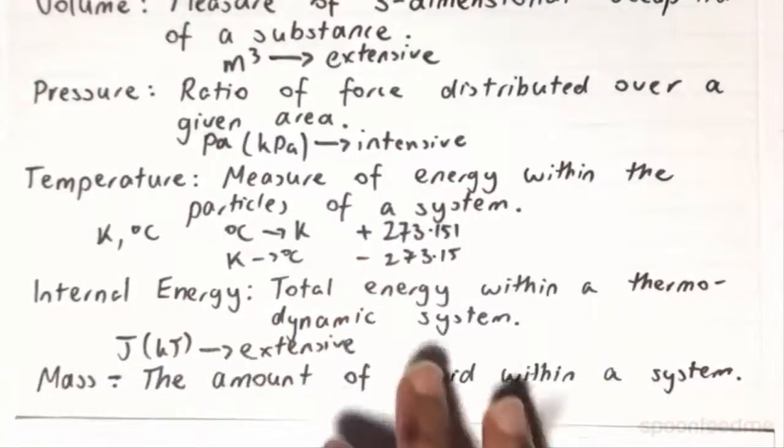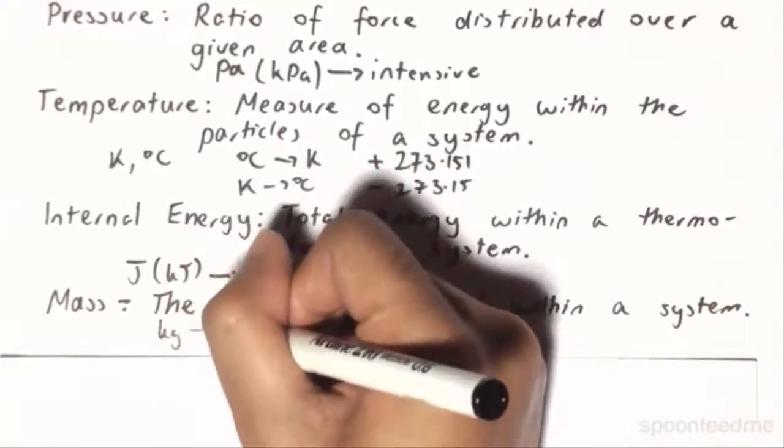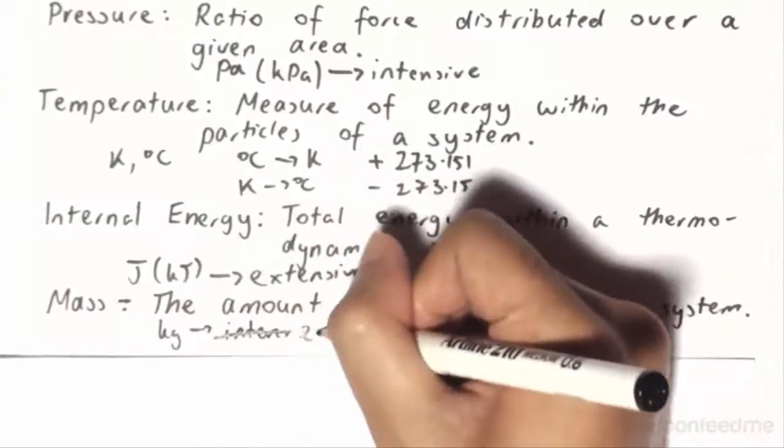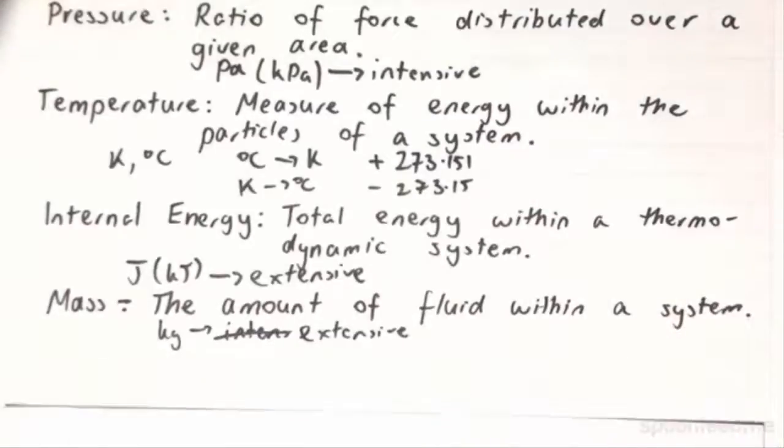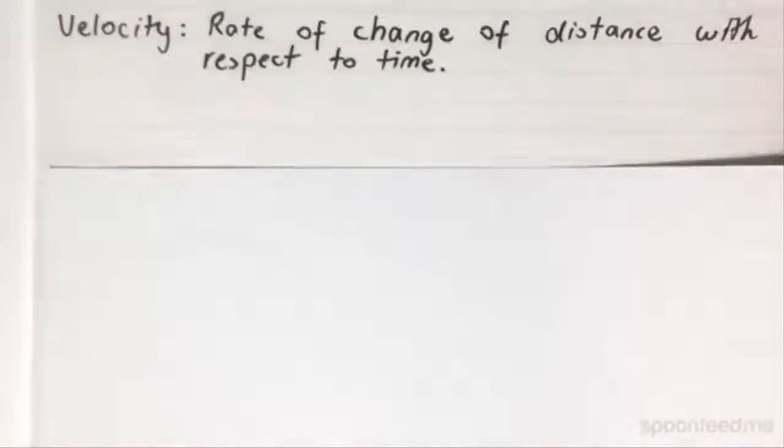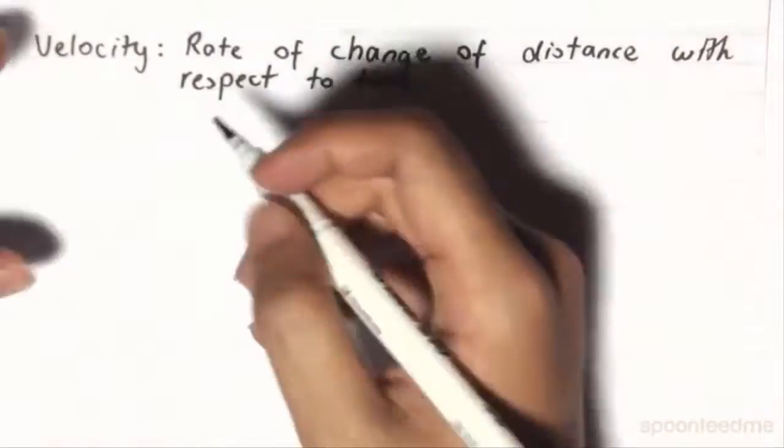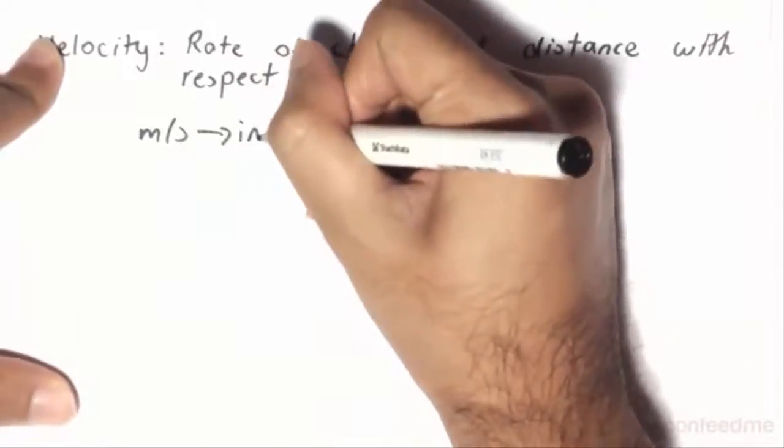Mass, which we already looked at. This is the amount of fluid within a system. This is going to be in kilograms and is intensive. And finally, we have velocity, which is the rate of change of distance with respect to time. This is typically given in meters per second, and it's going to be an intensive property.